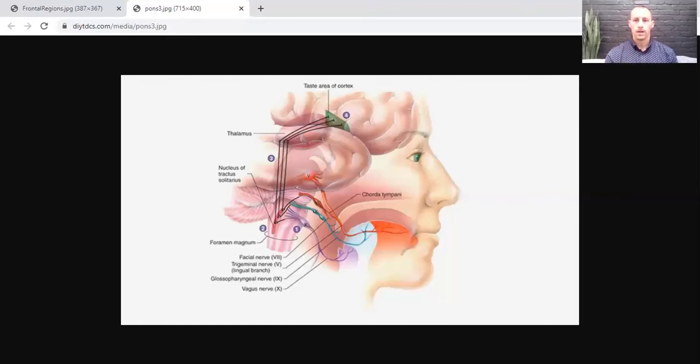And so now let's go to the paper here. And so this paper is from multiple sclerosis journal, the experimental translational and clinical, and it's from 2017. It's called non-invasive tongue stimulation combined with intensive cognitive and physical rehabilitation inducing neuroplastic changes in patients with MS.